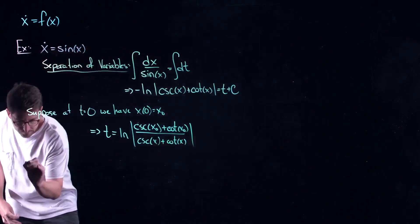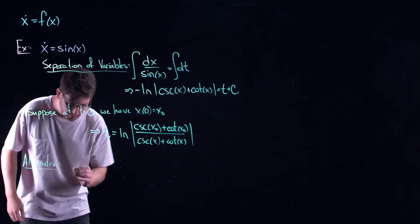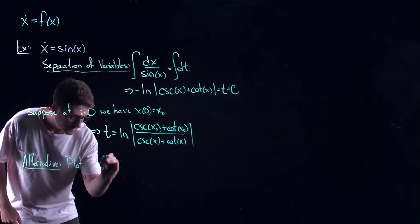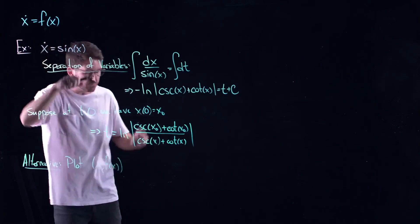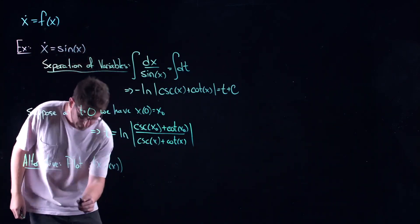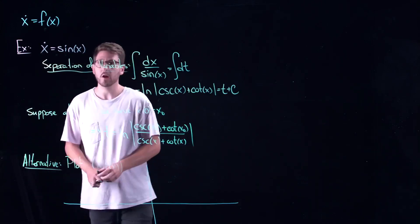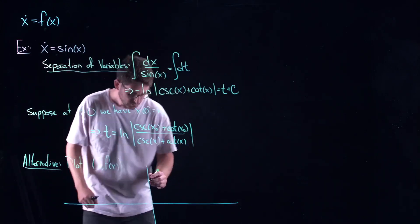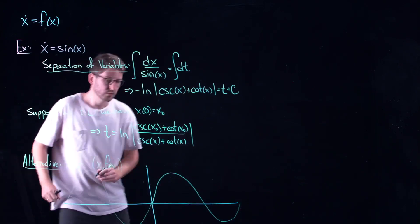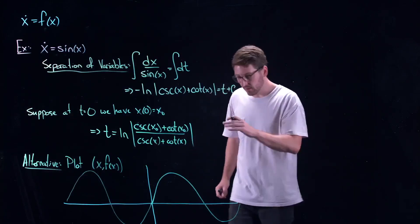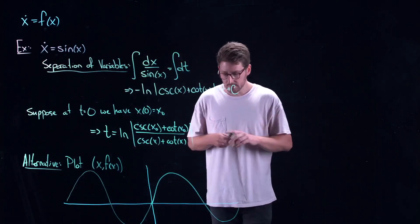Here's the alternative. You may have seen this in one of my previous videos, but what I'm going to do is plot x versus f(x). So f(x) is the right-hand side — this is essentially plotting x versus its derivative. In this case, I'm basically just plotting a sine curve.